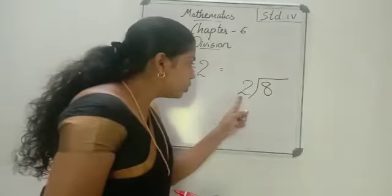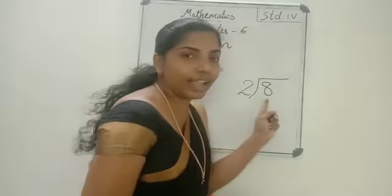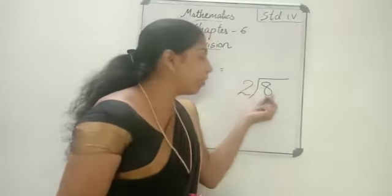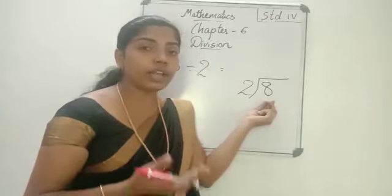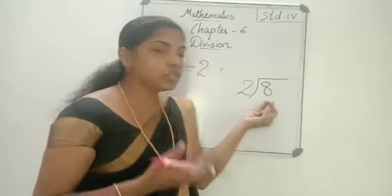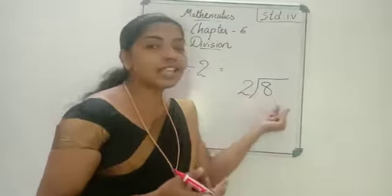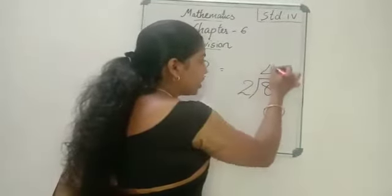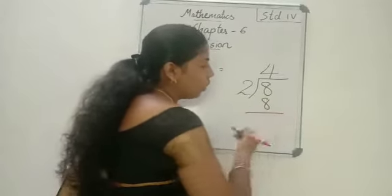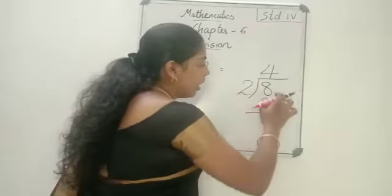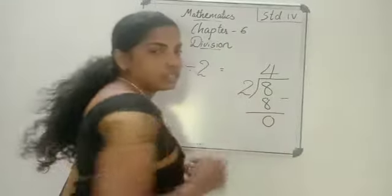Now we have to see 2 into what is 8, 2 into which number we will get 8. Already you have by heart the multiplication table, so you can easily say 2 into 4 is 8. That 4 you have to write here, and 2 fours are 8, and now you have to subtract.